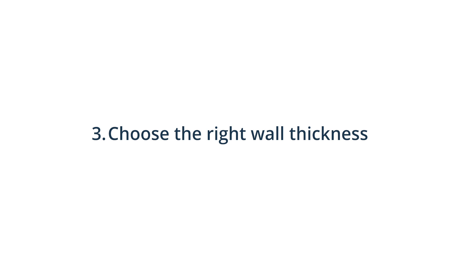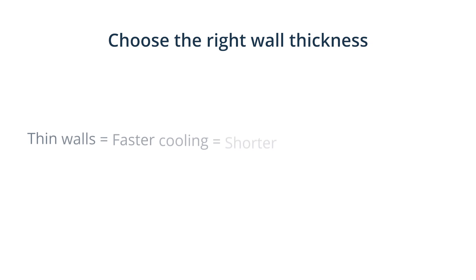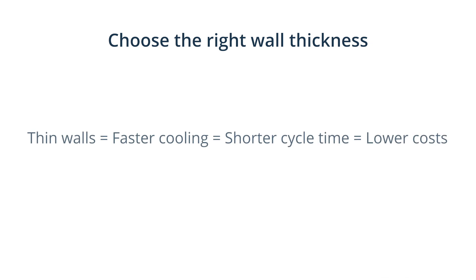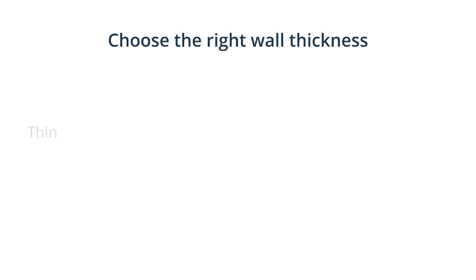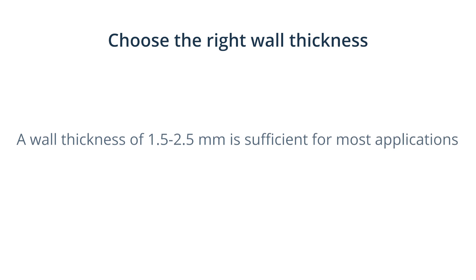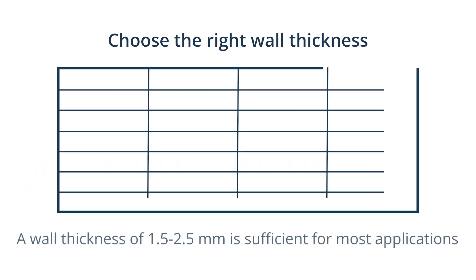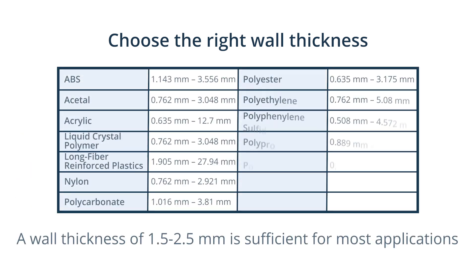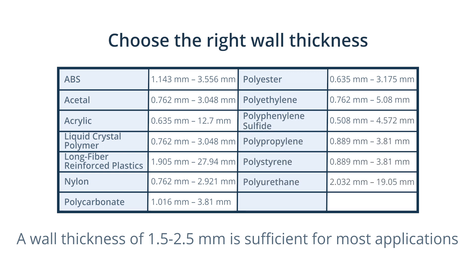Tip 3: Choose the right wall thickness. There are a few key points to consider to ensure you choose the right wall thickness. Thinner walls shorten the cycle time and lower the cost of your part. For many applications, a wall thickness of 1.5 to 2.5 mm is sufficient, but you can also refer to recommended wall thicknesses for different materials.